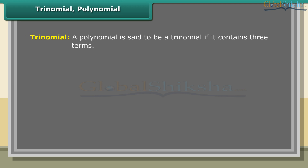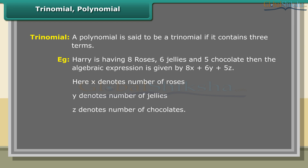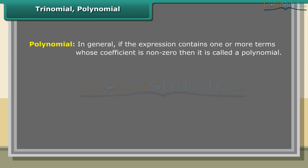A polynomial is said to be a trinomial if it contains three terms. For example, Harry is having eight roses, six jellies, and five chocolates. Then the algebraic expression is given by 8x plus 6y plus 5z, where x denotes number of roses, y denotes number of jellies, and z denotes number of chocolates. 8x plus 6y plus 5z is a trinomial which contains three terms.